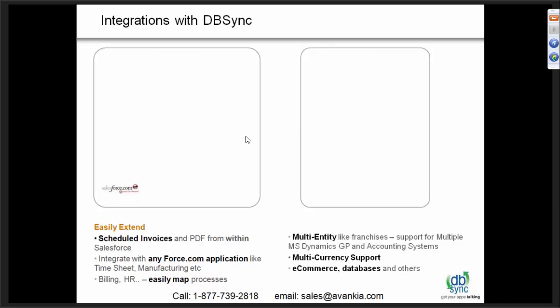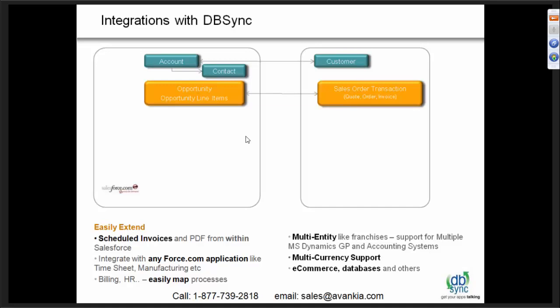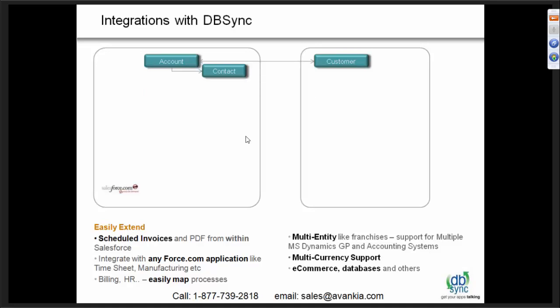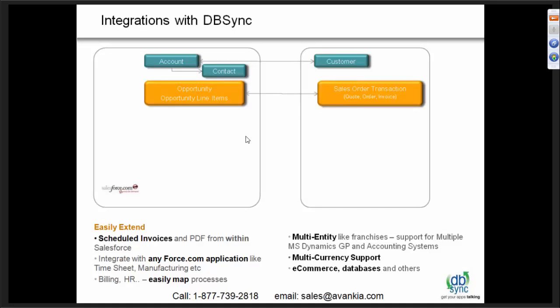DVSync for GP: the way we have designed this product is with a predefined template that can be utilized and get up and running quickly. The accounts object from Salesforce.com is tied up with customers in GP, and contacts flow between GP and Salesforce.com bi-directionally. If you create an account it will create a customer in GP, or if you create a customer in GP it will create an account in Salesforce. We have also created this predefined template for opportunity and opportunity line items with the sales order transaction in GP, so you can create a quote or sales order transaction using opportunity or opportunity line items.